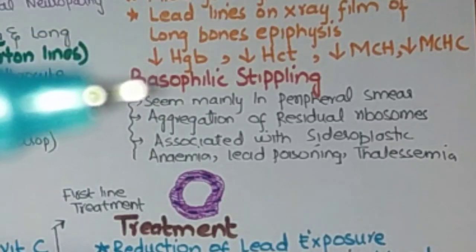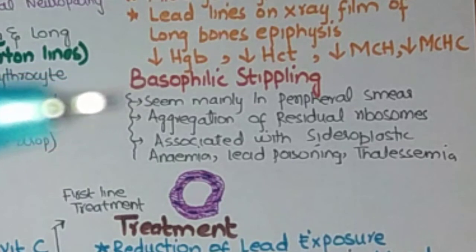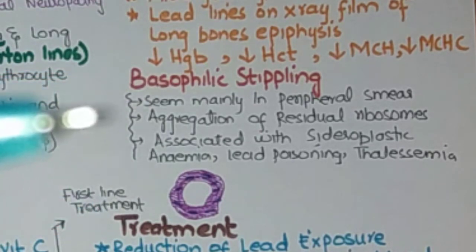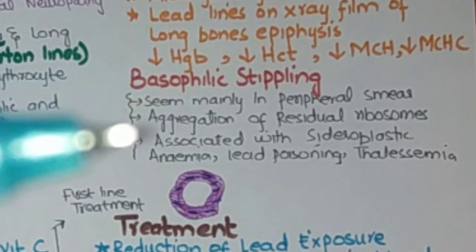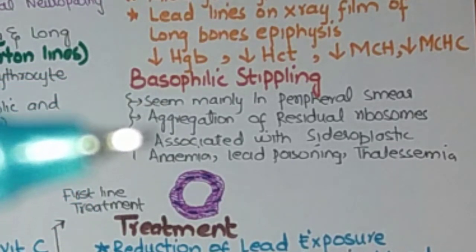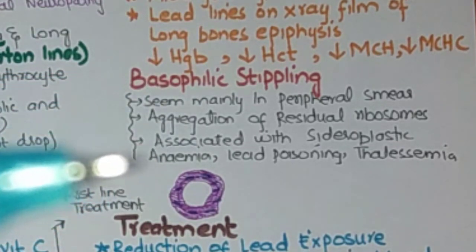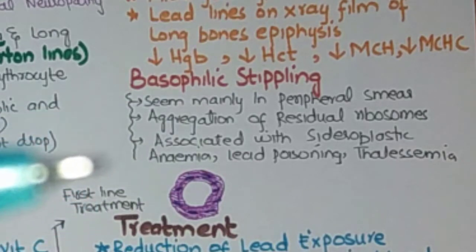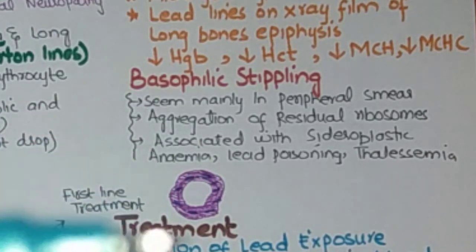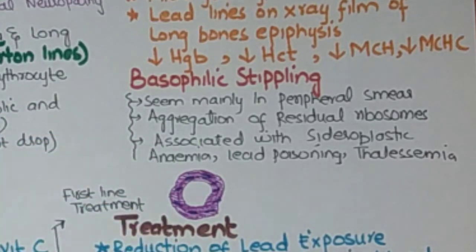Basophilic stippling is seen mainly on the peripheral blood smear. It is aggregation of the residual ribosomes, associated with sideroblastic anemia, lead poisoning, and thalassemia.